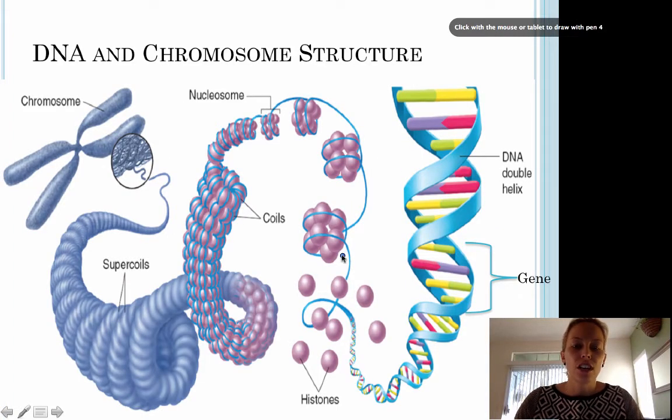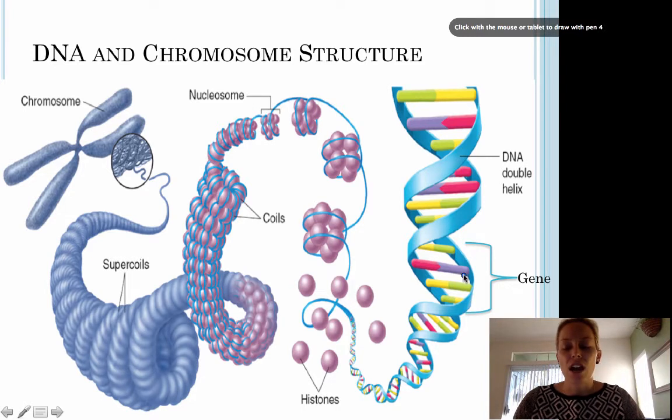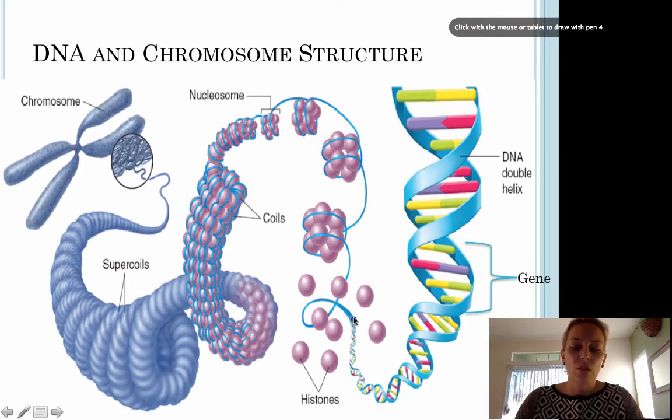Here's another look at DNA and chromosome structure. We've got our DNA double helix. A segment of DNA is known as a gene, and genes code for proteins which give specific traits to an organism, whether that be hair color, eye color, height, and so forth. DNA becomes tightly coiled around these proteins called histones. Those histones get coiled even further to create a nucleosome. Those nucleosomes get coiled even further.